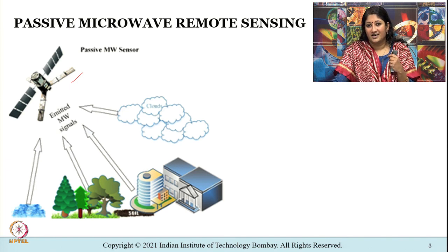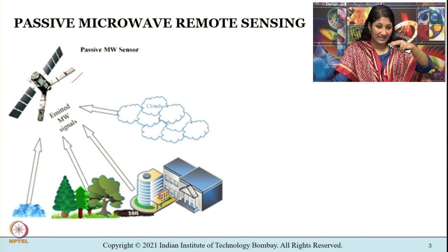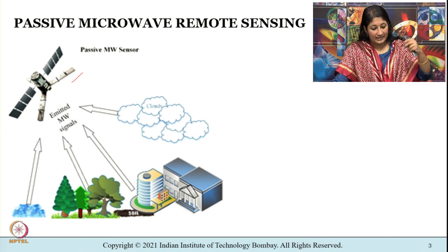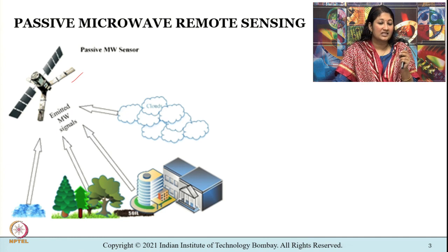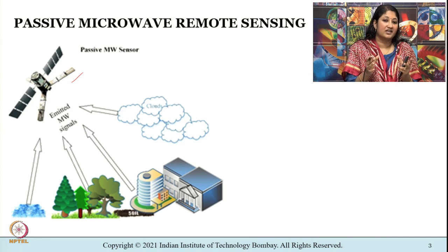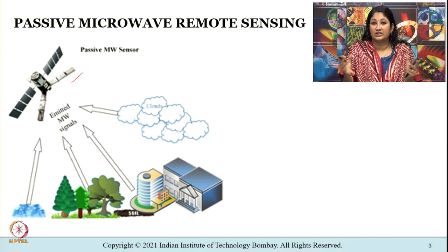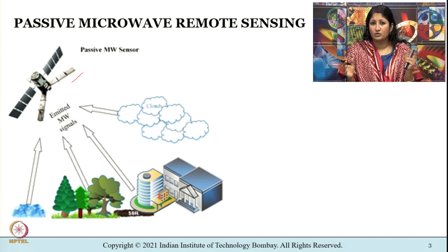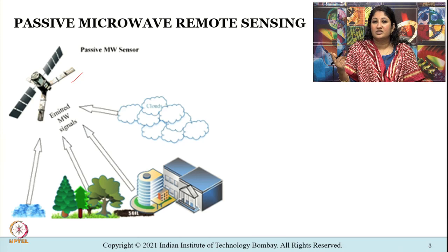Imagine a downward-viewing passive spaceborne radiometer. This instrument is built to sense the upwelling electromagnetic energy from the surface of the earth, which reaches the top of atmosphere after attenuation. Two new terms are introduced here: radiometer and attenuation.